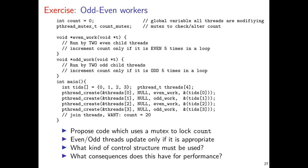We're going to conclude today's discussion by motivating one additional coordination mechanism called a condition variable, through a somewhat involved model problem. Consider the following setup: a main thread starts up four child threads total — two running a routine called even_work and two running odd_work. The intent is to increment a global variable 'count' 20 times. Even workers increment the variable only when it has an even value, and odd workers increment it only when it has an odd value.